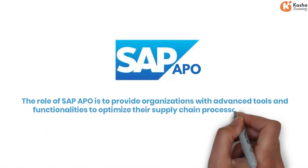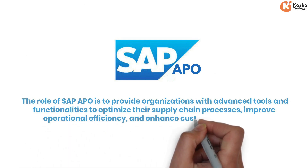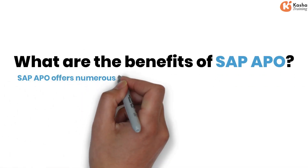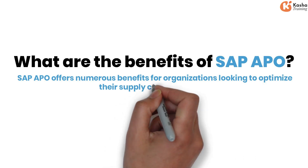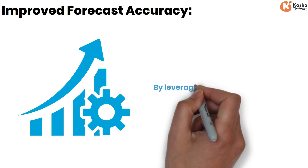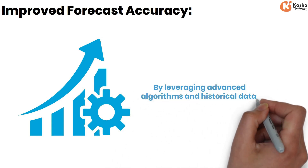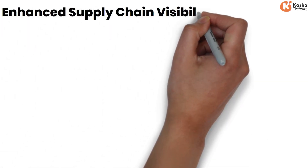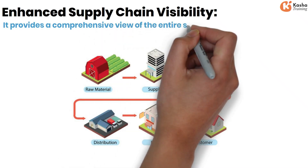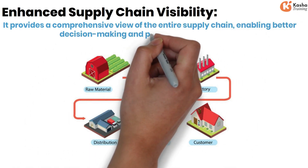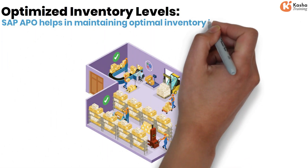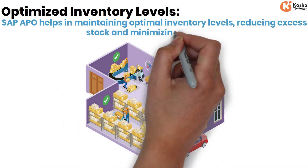SAP APO offers numerous benefits for organizations looking to optimize their supply chain processes. Key advantages include improved forecast accuracy — by leveraging advanced algorithms and historical data, SAP APO enhances demand planning leading to more accurate forecasts. It also provides enhanced supply chain visibility, offering a comprehensive view of the entire supply chain for better decision making and proactive management, as well as optimized inventory levels that reduce excess stock and minimize stock-outs.